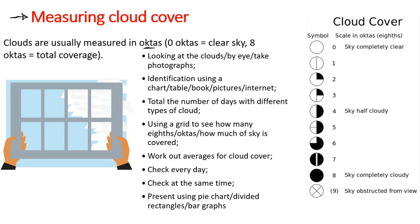Now let's look at measuring cloud. Clouds are measured in octas, which is a scale of eight. Zero octas equals a clear sky and eight octas means total coverage. To measure cloud, you observe it by eye or take a photograph. You then identify the type using a chart, book, or internet. You tally the number of days with different types of cloud, use a grid of eight to see how much of the sky is covered, work out the average cloud cover, check at the same time each day, and present results using a pie chart or bar graph.